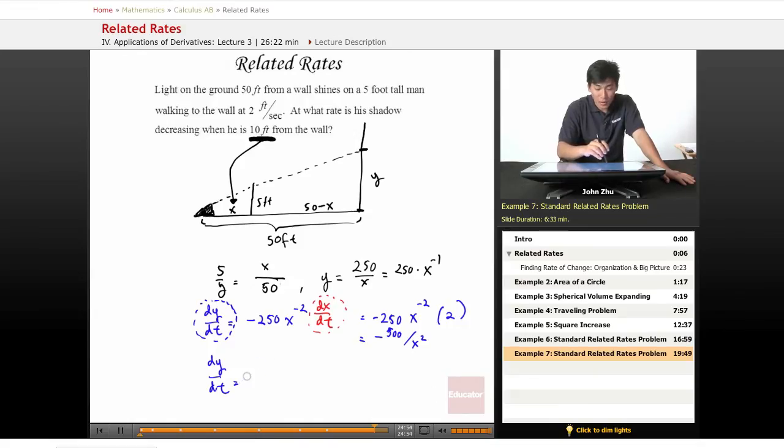X is not what they're giving you. So here it's a little tricky. Actually, 10 feet from the wall, 50 minus x is 10 feet from the wall.